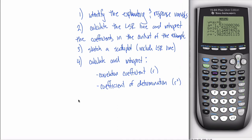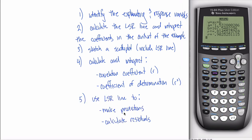Fifth and finally, there are two applications of the LSR line. First, you can make predictions — for example, if it's going to be 50 degrees tomorrow, how many cups of hot chocolate do I expect to sell? Second, calculate residuals, which is how far above or below the line a given observation is. Every observation has its own residual, and expect me to ask you to calculate one. If you can do these five things, you'll do great on the question from this section on your final exam.